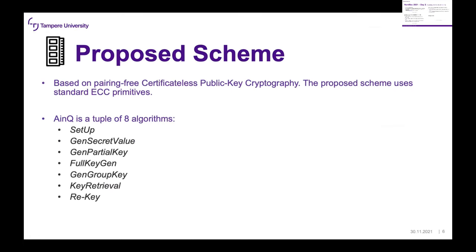The scheme is based on pairing-free, certificate-less public key cryptography and uses standard ECC primitives. We use this approach to make it conducive for resource-constrained devices, because pairing-based crypto algorithms are very expensive on such devices. AI&Q is a tuple of eight algorithms: setup, generate secret key value, generate partial key, full key generation, generate group key, key retriever, and re-key. I'll elaborate on all eight algorithms.